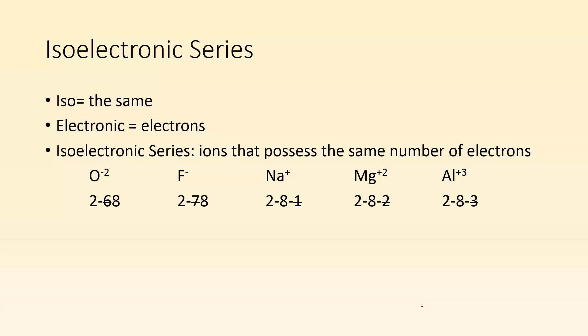Isoelectronic series. Sometimes it's helpful if we want to talk about how the nucleus is affecting the size of an atom to take a look at atoms that have the same number of electrons, or they're isoelectronic. Isoelectronic series are ions that possess the same number of electrons. You can see oxygen here. When it becomes an ion, it was 2-6. It gained two electrons, and now it's 2-8. All of these ions have the same electron configuration of 2-8. So now the question is, which one's going to be the biggest, or which one's going to be the smallest?